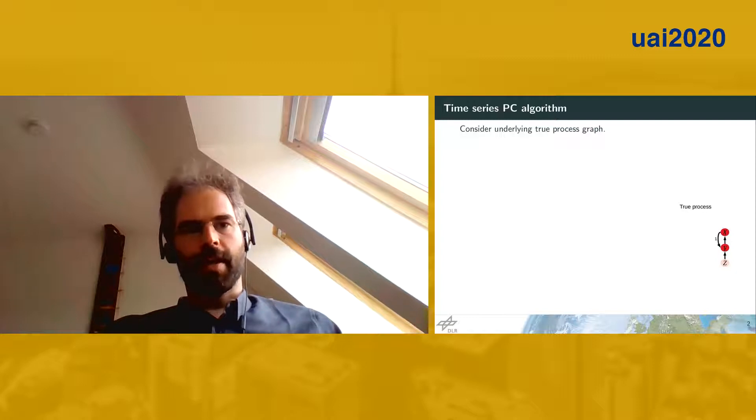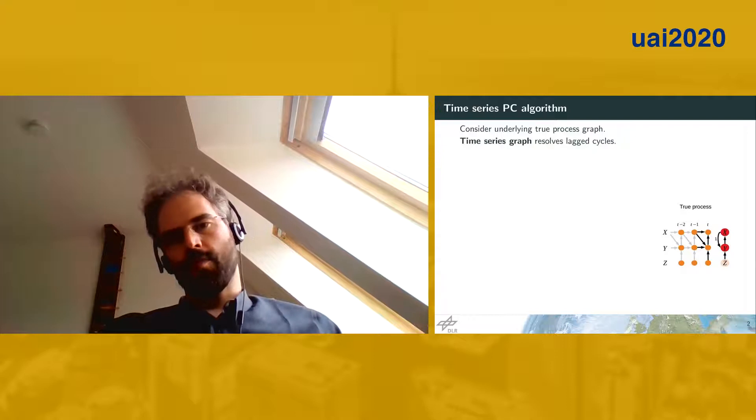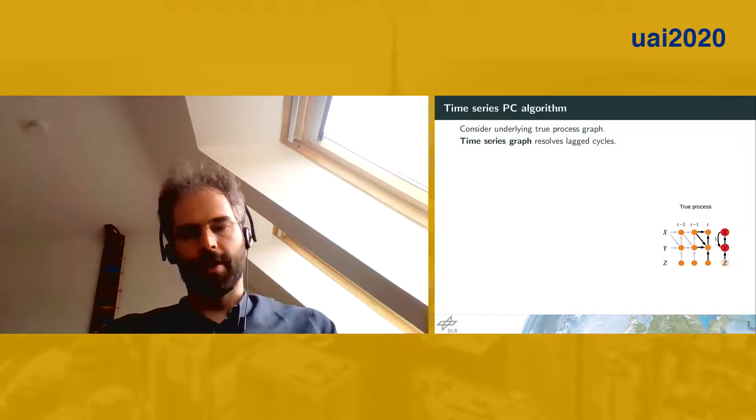Consider an underlying true process graph to illustrate what is the problem with a common method here, the PC algorithm. Our goal is to reconstruct the time series graph. In looking at the difference between these two, you see that what are cycles in the process graph can often be resolved in the time series graph in a time resolved manner.